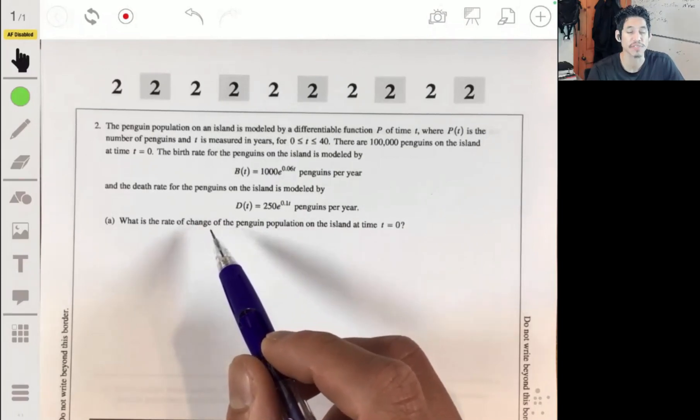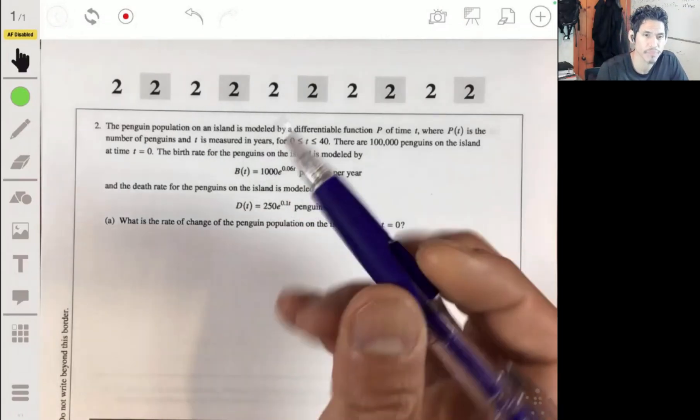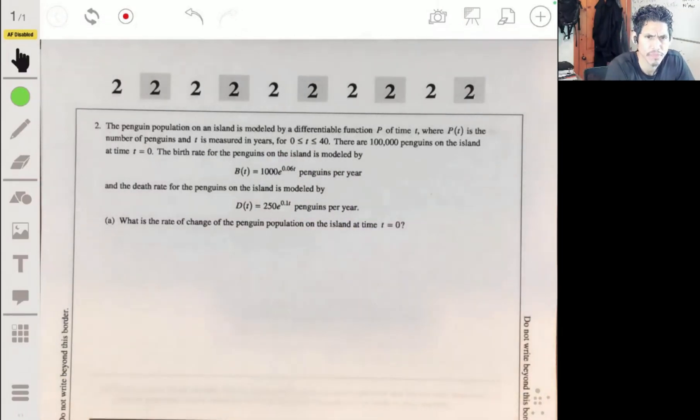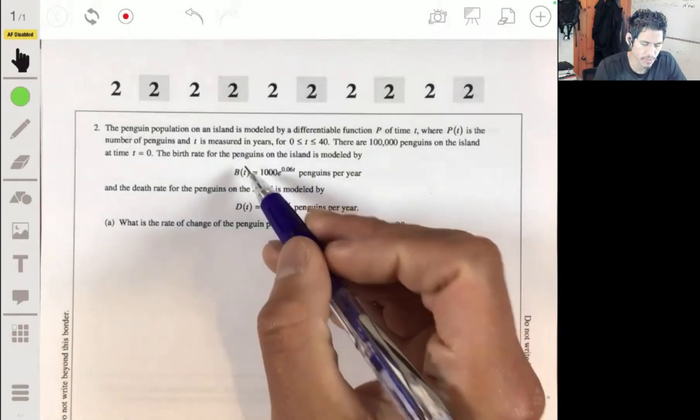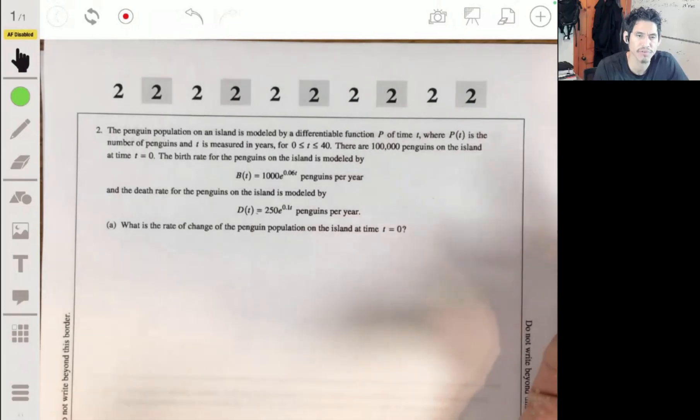Part A is asking: what is the rate of change of the penguin population on the island at time t equals 0? Since it says rate of change of the population, we have to consider both the birth rate and the death rate and just think logically about how many penguins are going to be alive when you combine those two.